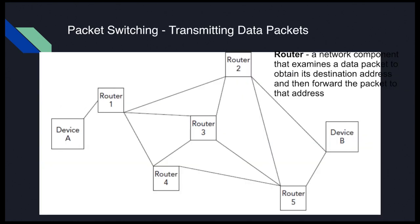Packet switching is how we transmit data packets in a network like the internet or a Wi-Fi network. Let's say you want to send an essay to your friend — that could be broken up into four data packets: one, two, three, and four. It could be more; this is just an example. Each of these will have a header, payload, and trailer.